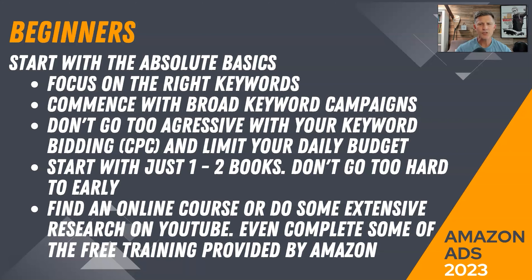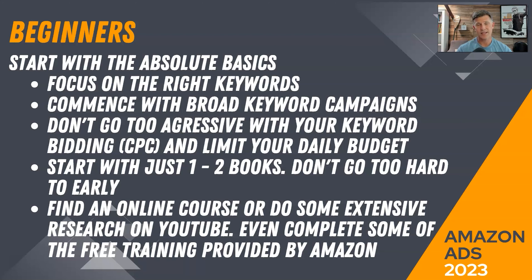Don't go too aggressive with your keyword bidding or your cost per click (CPC), and limit your daily budget. You need to work out what that daily budget is — if it's $5 per day, just put $5. Don't put $10, because $10 could be spent very quickly if your cost per click is high, say $0.50. It would be used up very quickly if you only had $5 or $10.